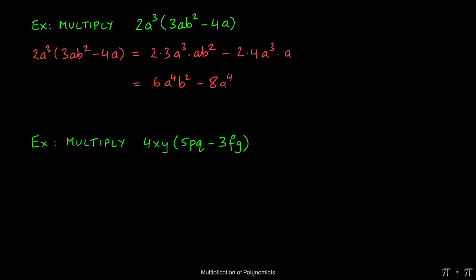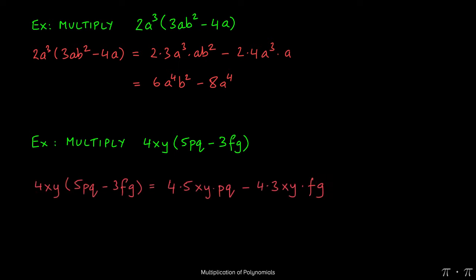Let's look at another quick problem. Let's say we're asked to multiply 4xy by 5pq minus 3fg. We do the exact same thing we did in the previous problem, which is to distribute the 4xy into both terms on the inside. When we do, we can write the terms that belong together next to each other: 4 times 5, and then xy times pq. Negative 4 times the 3 can be written next, and here again we have xy times fg.